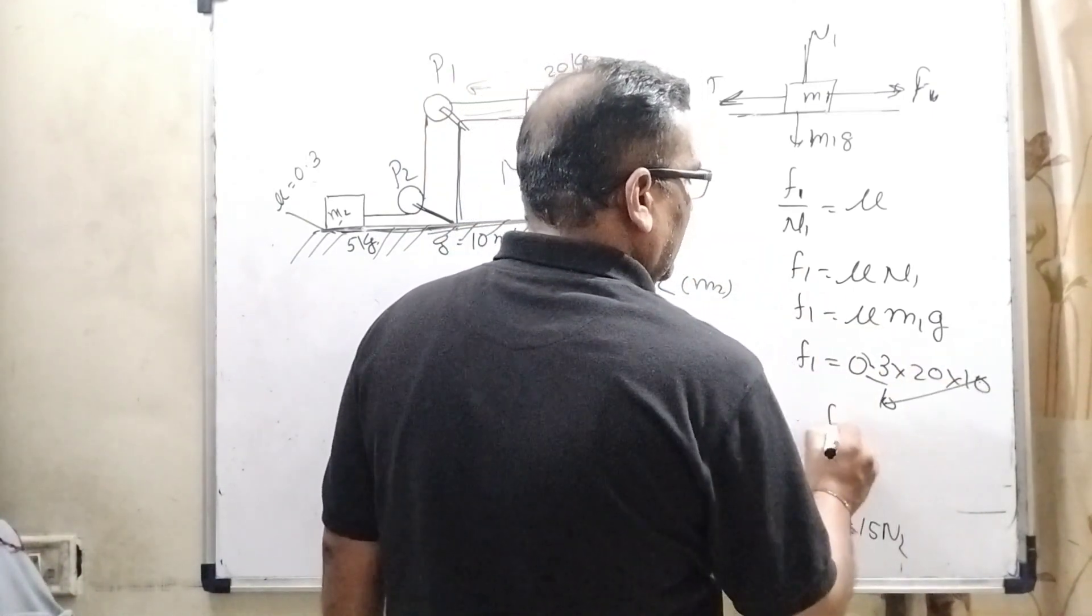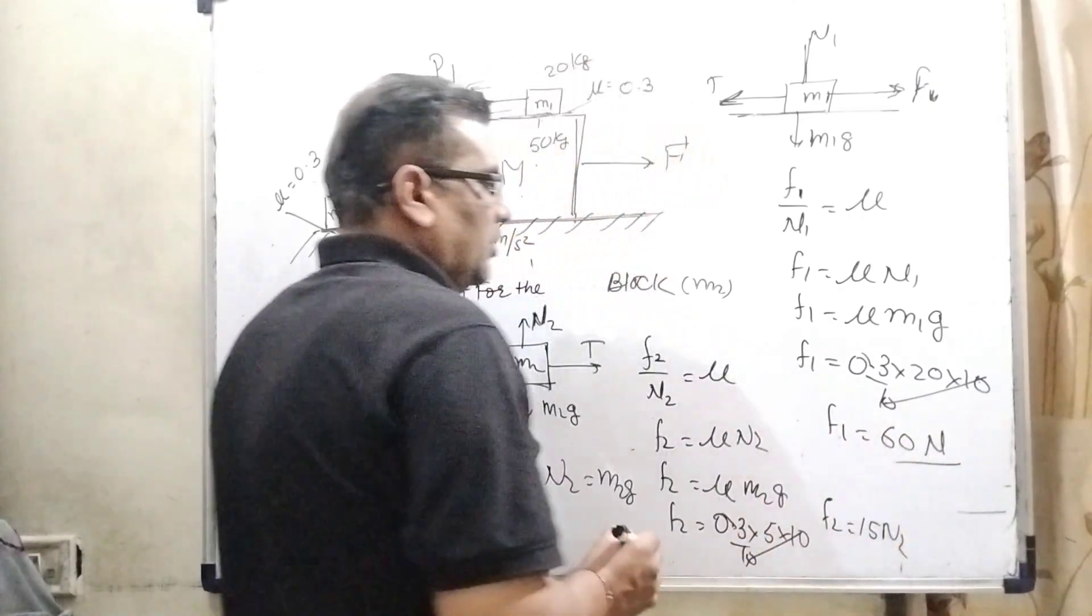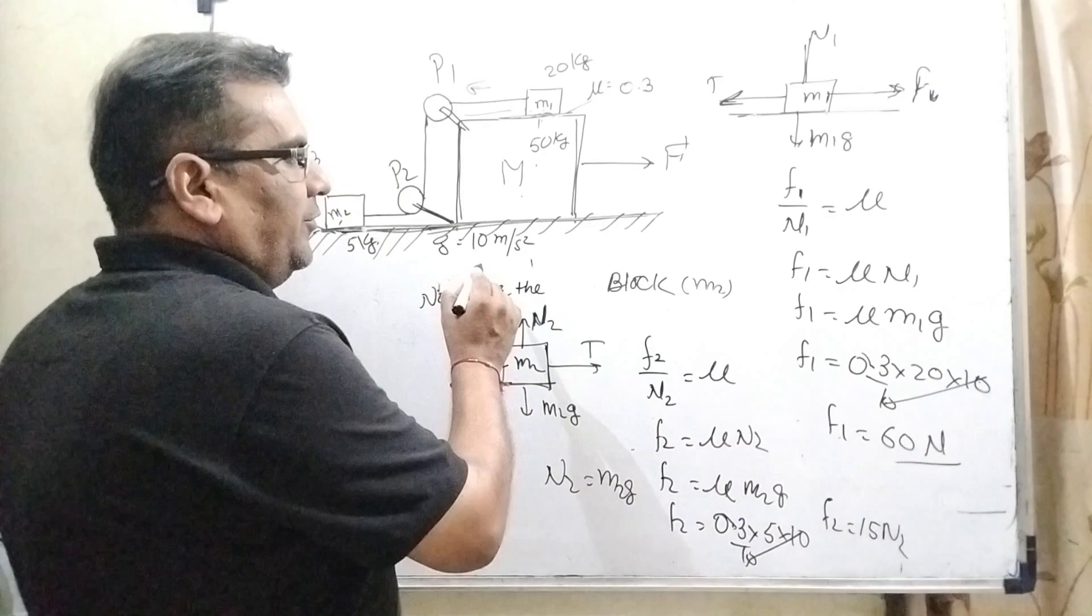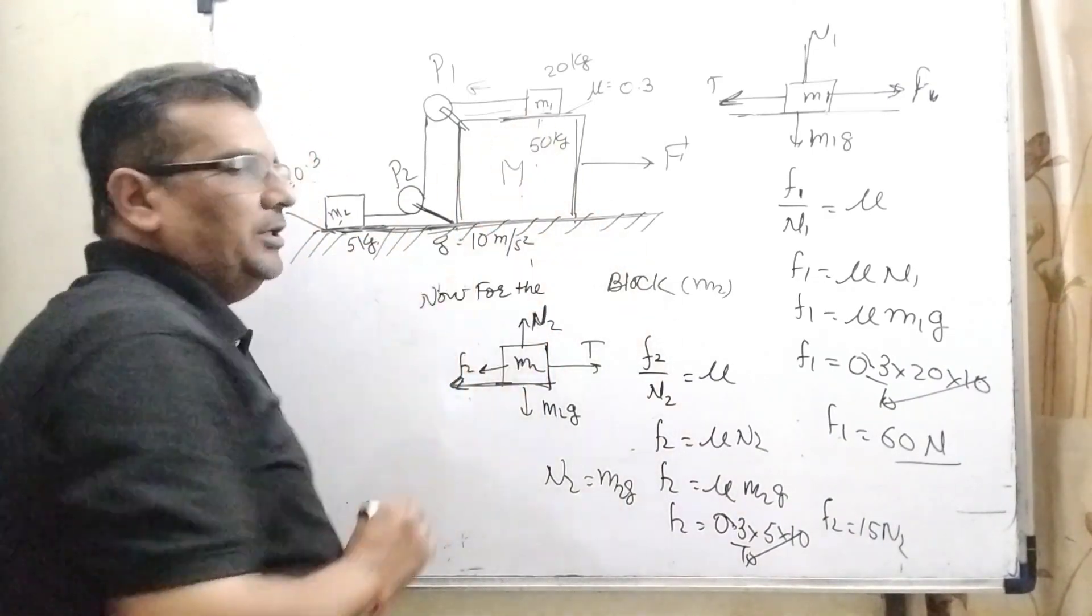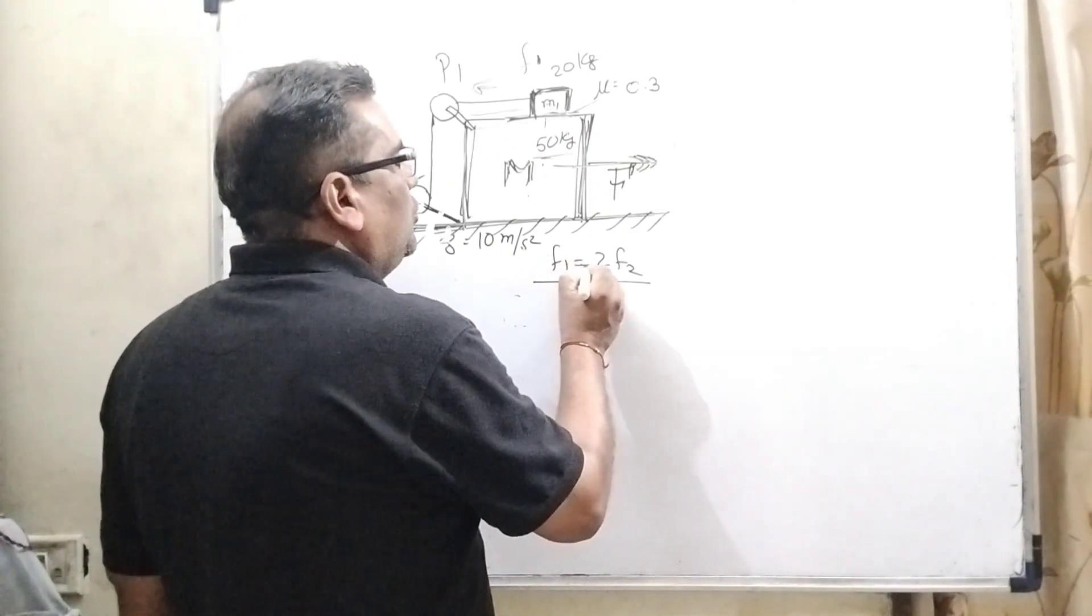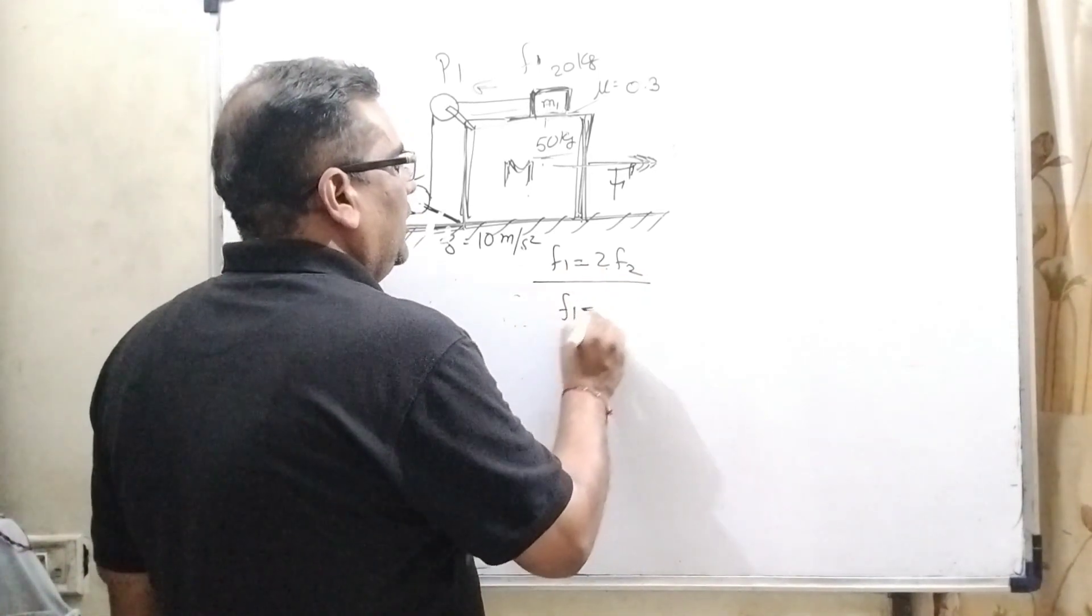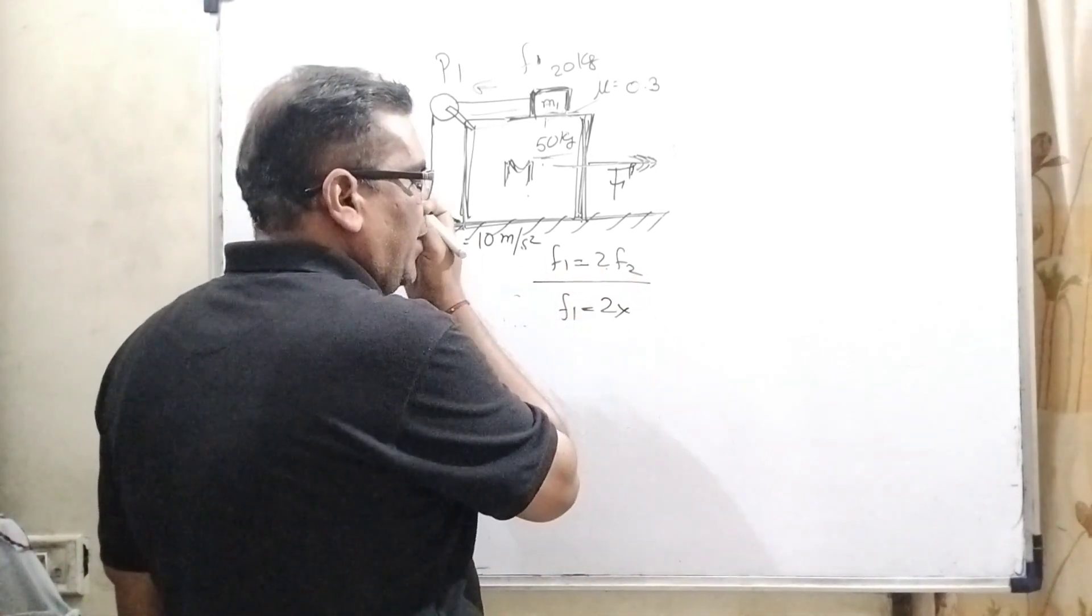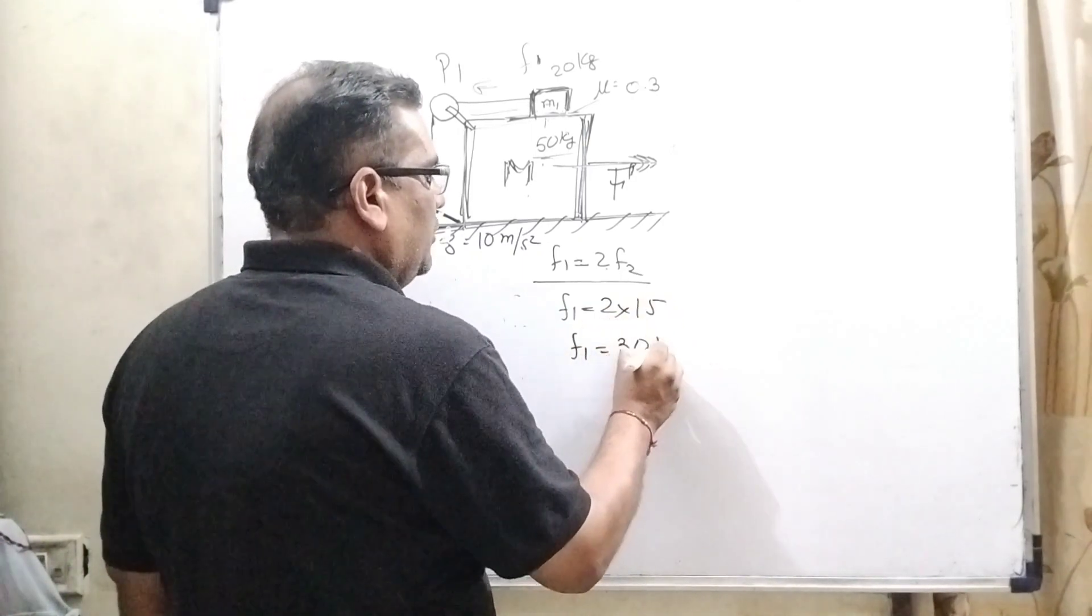So here F1 equal to 60 Newton. So clearly F1 is more than F2. So therefore it is in a static condition. Now we have given F1 equal to twice of F2. It means F1 equal to what is F2? F2 is 15 then 15 to the 30 Newton.